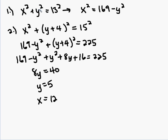So we take the first equation x squared plus y squared is equal to 13 squared. And we solve it in terms of x squared. So x squared now is equal to 169 or 13 squared minus y squared. In the second equation we have x squared plus y plus 4 squared is equal to 15 squared. So let's just revisit that again.